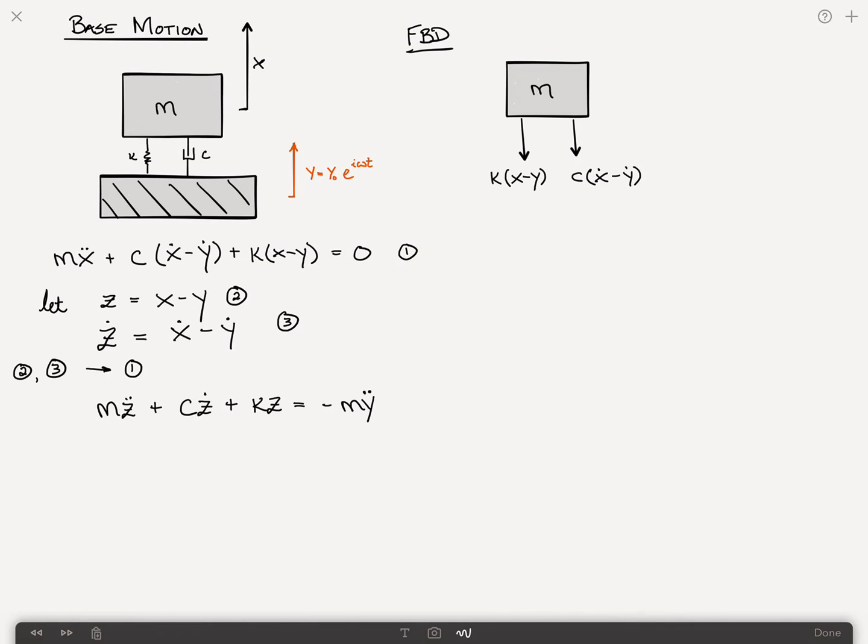But since we know what y double dot is, we can say this is equal to, and of course, y double dot is just the second derivative of this, which is just minus omega squared times y, which is y sub zero e to the i omega t. So what is all of that? The minus sign becomes a plus, omega squared m y sub zero e to the i omega t. And I'm just going to choose to write this in a more familiar term where we're going to call this magnitude just f sub zero, e to the i omega t. This will be number 4, this will be number 5, and we'll say where f sub zero equals omega squared m y sub zero. We'll call that equation 6.